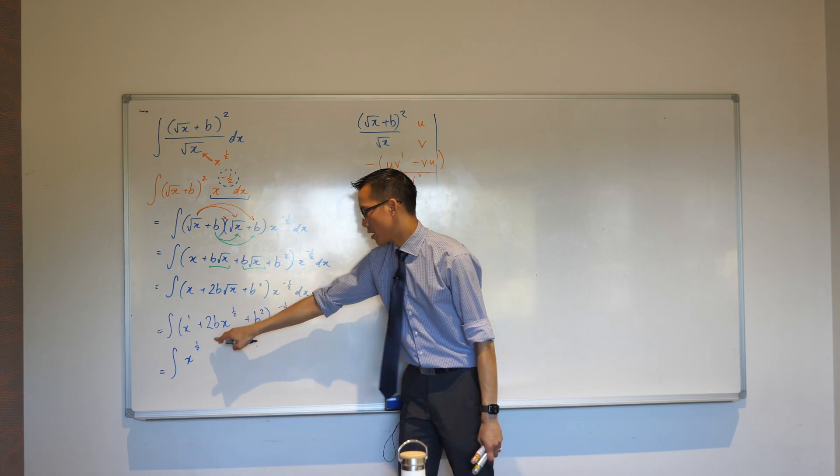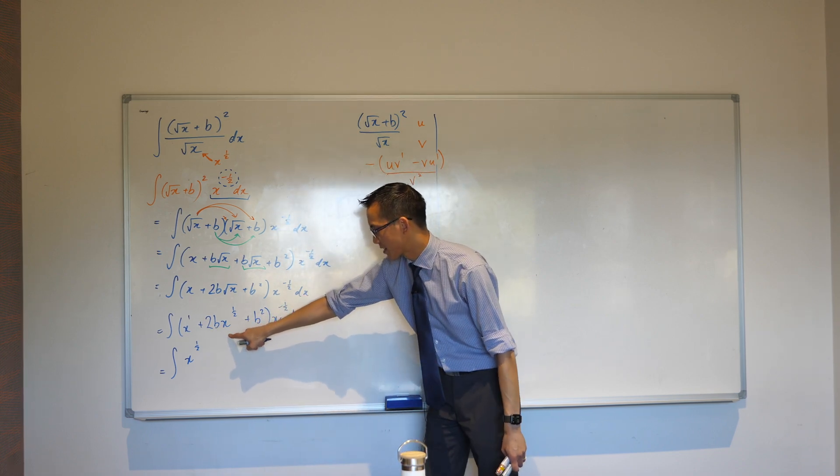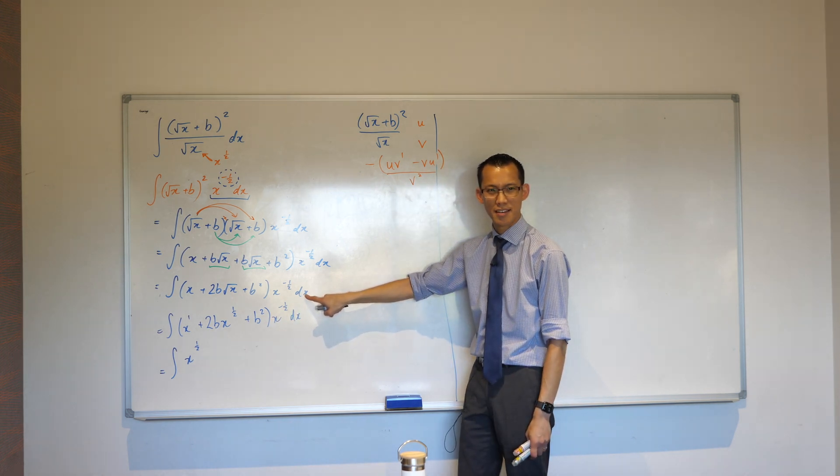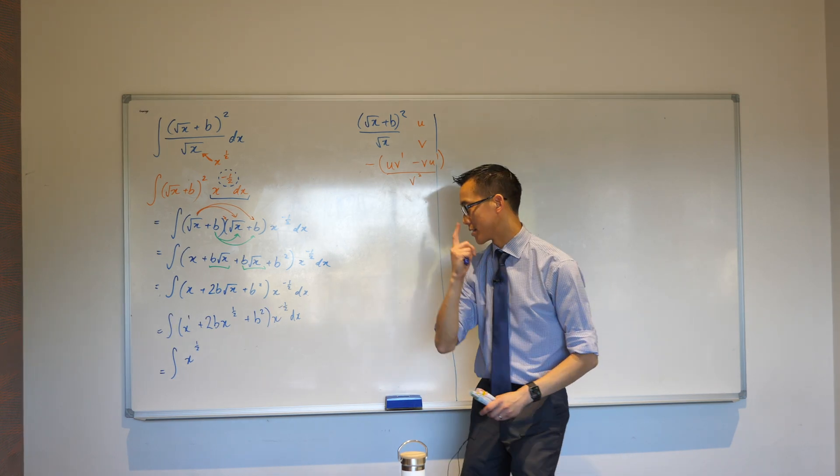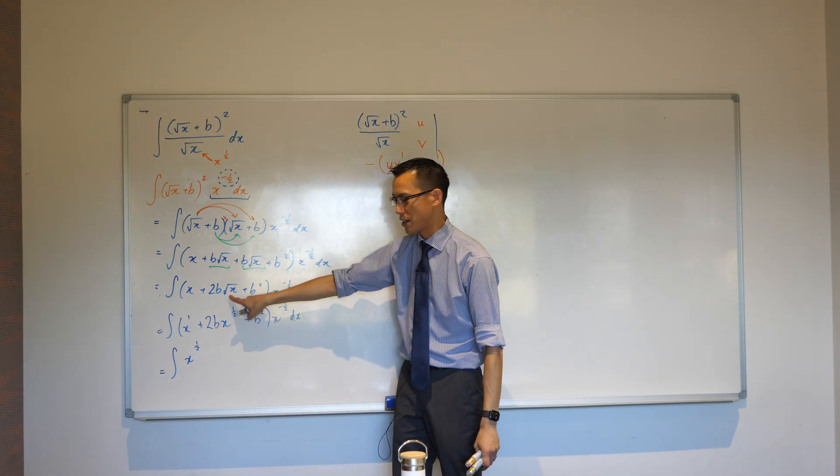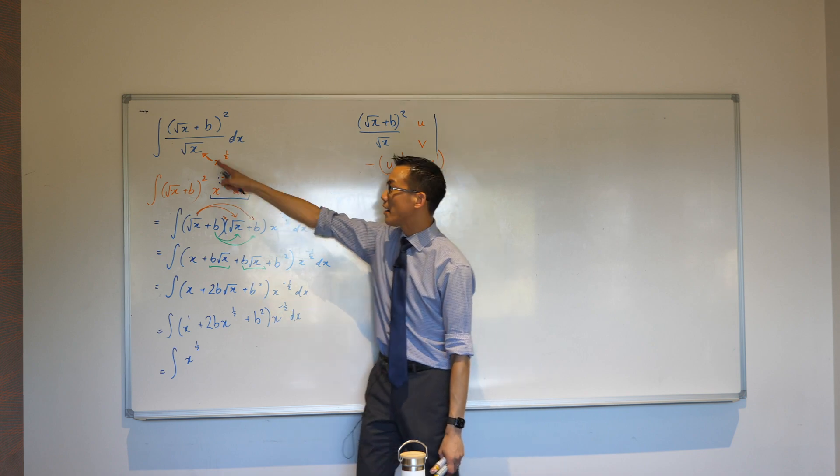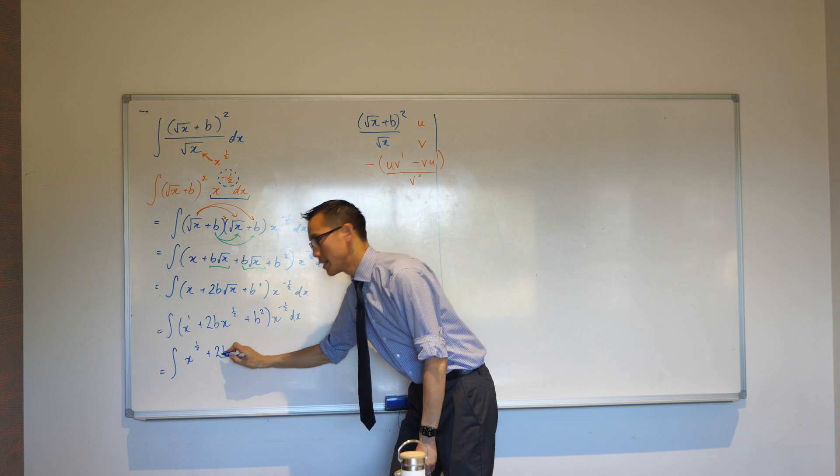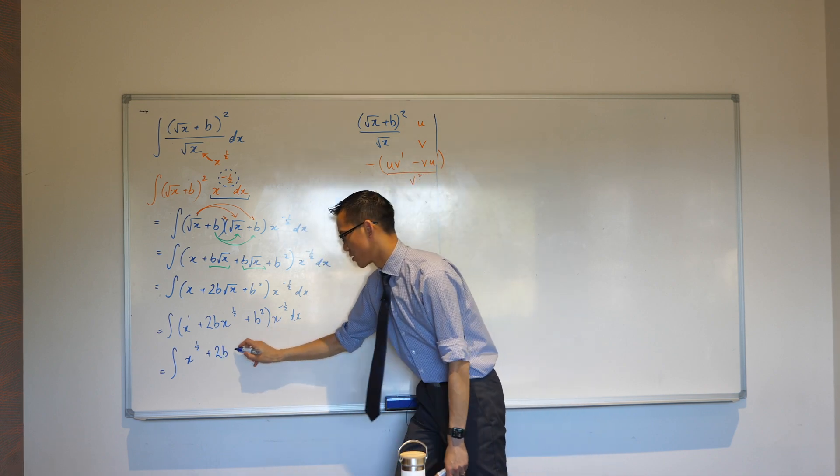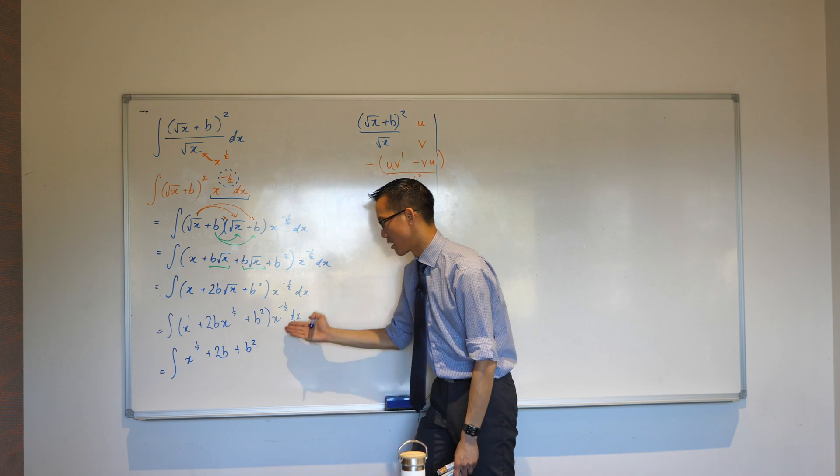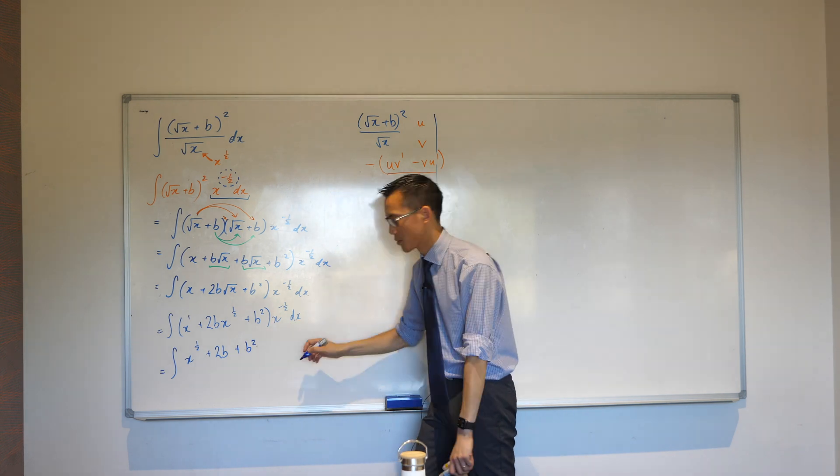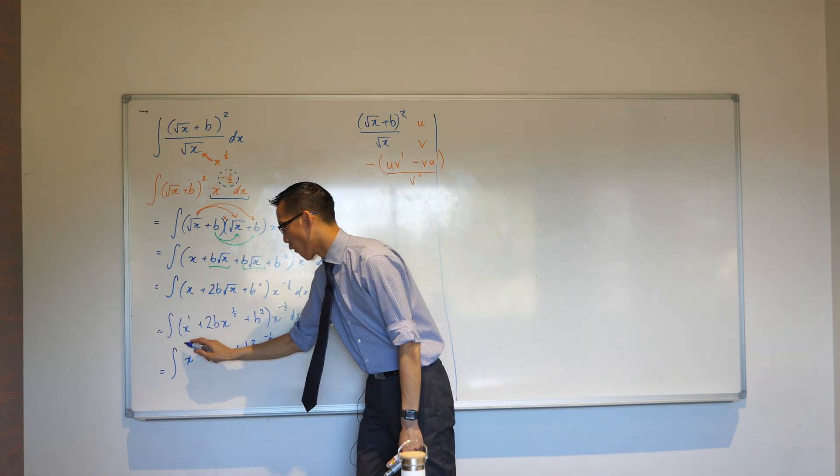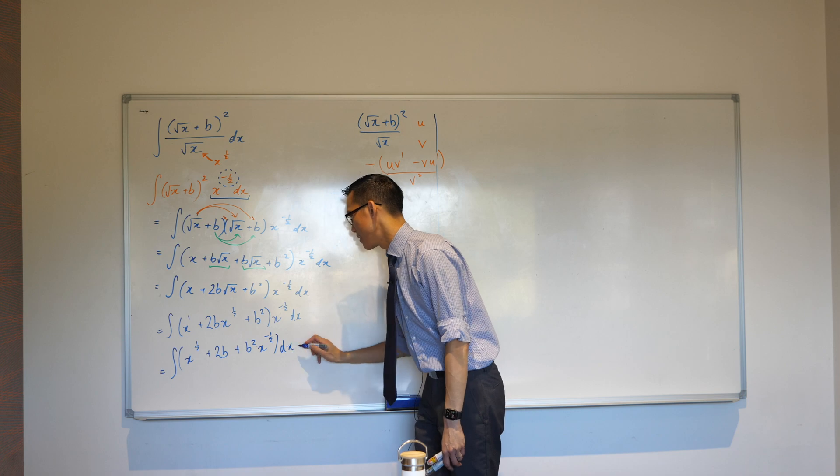Okay. Watch out for this one. This is, don't worry about the constant coefficient, x to the half times x to the negative half. What happens to the indexes? Yeah, they cancel out. By the way, of course they cancel out because this used to be a root x and this used to be a divide by root x. So, that's why they just cancel each other. So, that leaves you with 2b and then this is just a constant. So, it's b squared times, well, there's no other x terms. So, I'll just write that as it is. Hooray! All of that is going to be integrated.